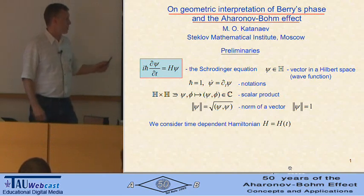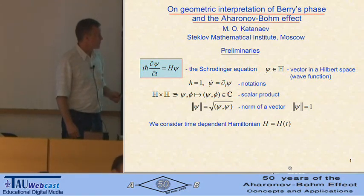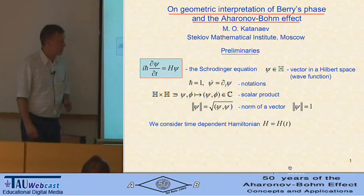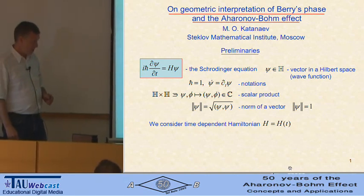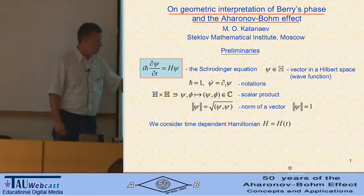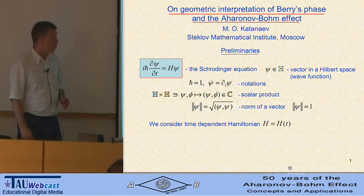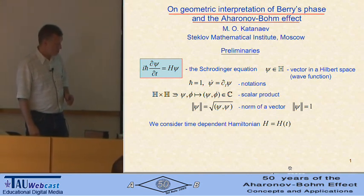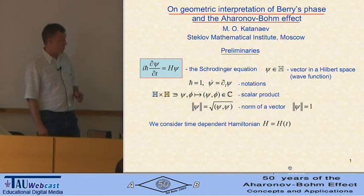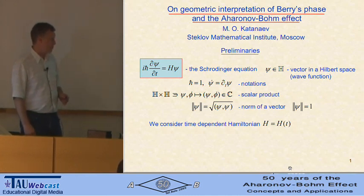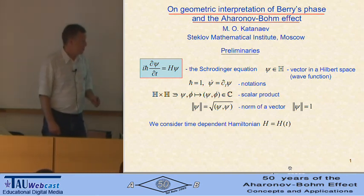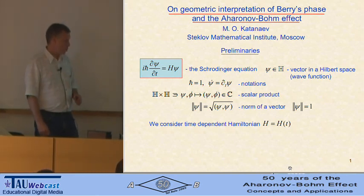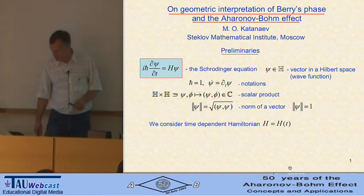We can see the Schrödinger equation written here. Psi is a vector in a Hilbert space or wave function. For simplicity, we choose h equals to 1 and denote the partial derivative of psi with respect to time by dot. In a Hilbert space, we have a scalar product written here, and usually we assume that the wave function is normalized to unity.